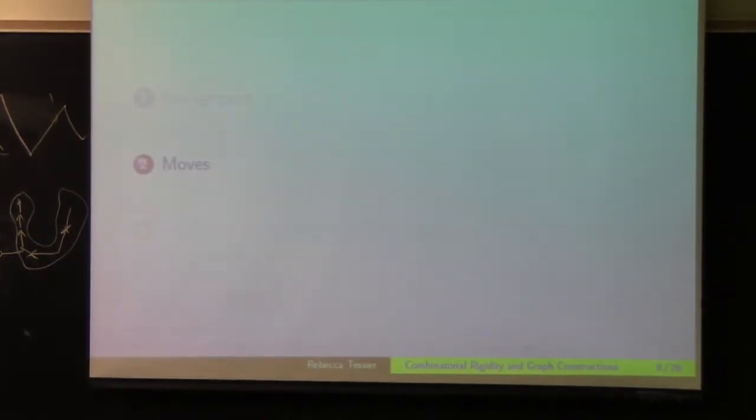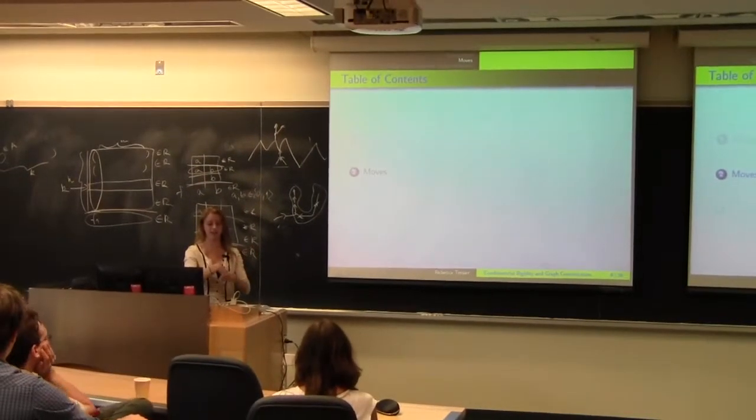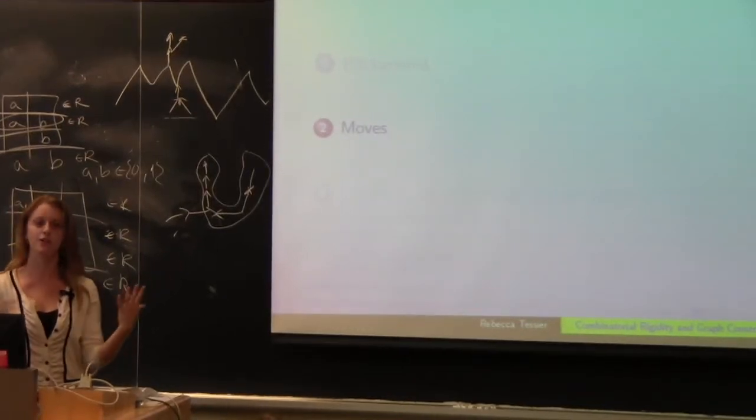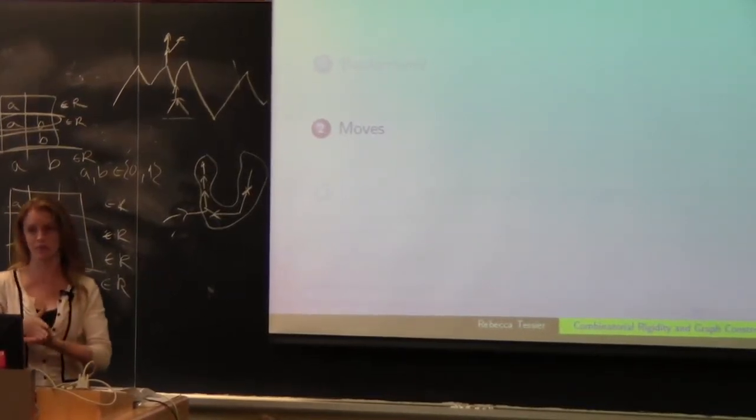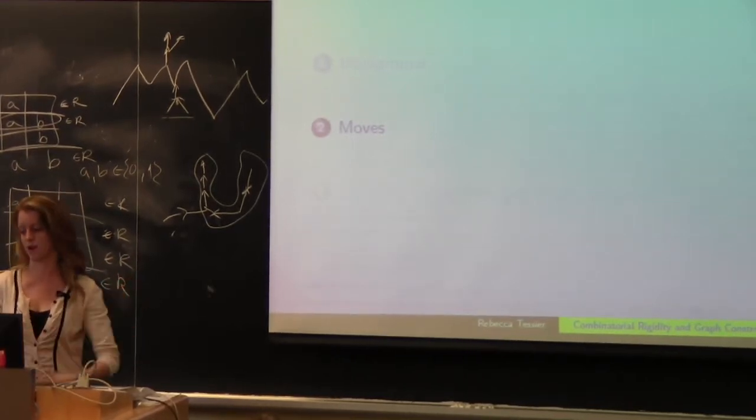So next I'm going to talk about some of the moves that I used to have an inductive characterization on this set of graphs. So what I was looking at with these moves is seeing if I have some base case of a 2-0-type graph, and I want to add a bunch of vertices and edges to make it a really big 2-0-type graph, what can I do that keeps this 2-0 property intact? Or if I'm breaking down a really big 2-0-type graph, how can I do that while maintaining this property?